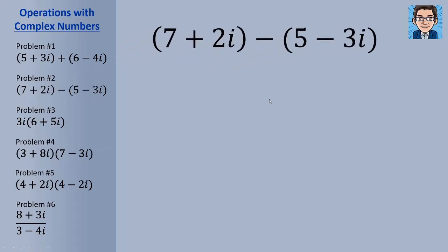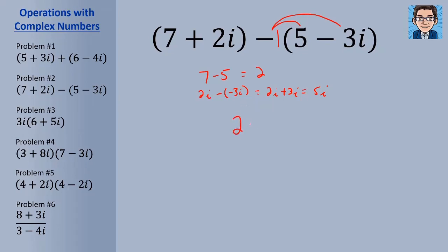When subtracting complex numbers, remember we're subtracting both pieces — both the real and imaginary parts. Some people place a negative 1 here to think about distributing it. Either way, 7 minus 5 gives 2, and 2i minus negative 3i is 2i plus 3i, or 5i. The answer is 2 plus 5i.